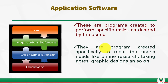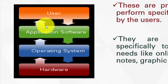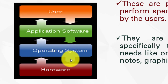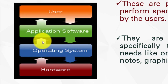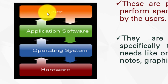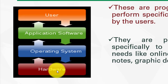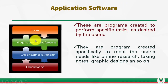Application software are programs created specifically to meet user needs like online research, taking notes, graphic designs, and so on. If you look at this diagram, you will see the relationship between the hardware, the operating system, and the application software. The operating system interfaces with the hardware and also with the application software. The application software interfaces with the operating system and the user. You need to understand this relationship between the hardware, the operating system, the application software, and the user.